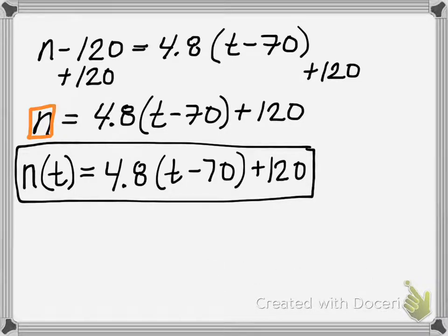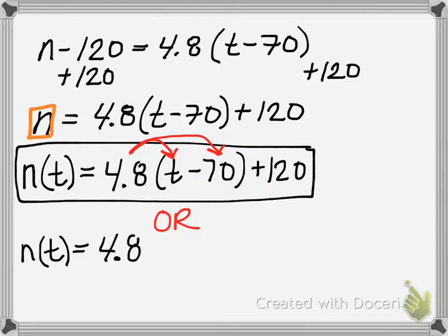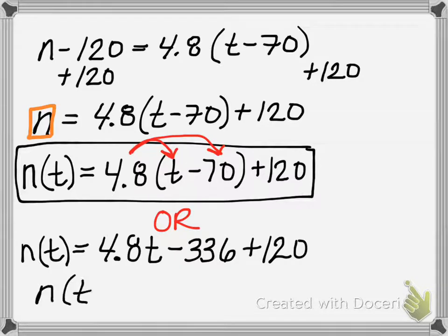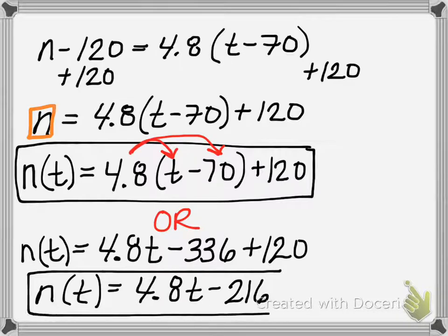However, if you prefer slope-intercept form, you don't like this form, then we could go ahead and distribute. This is optional. You don't have to do slope-intercept, but if you wanted to or your instructor requires it, then you would distribute. 4.8 times T is 4.8T. 4.8 times negative 70 is negative 336, and then add 120. This gives us the equation N of T equals 4.8T minus 216. This would be an alternative answer, but both of these boxed answers are acceptable.